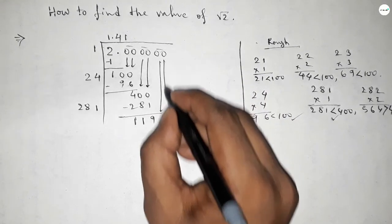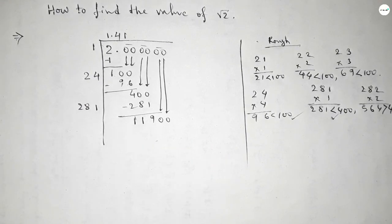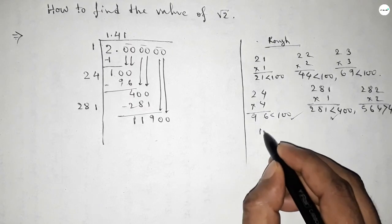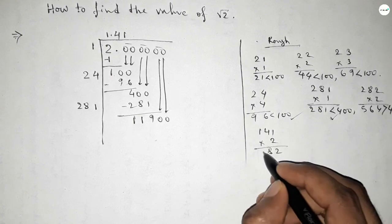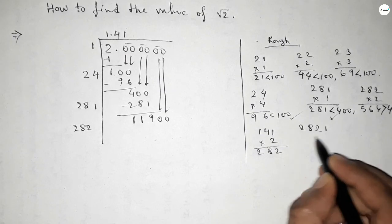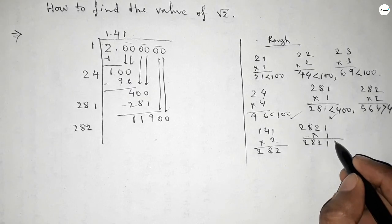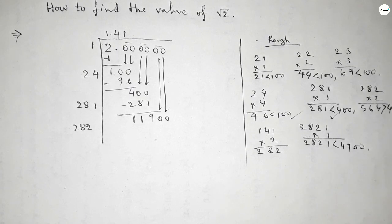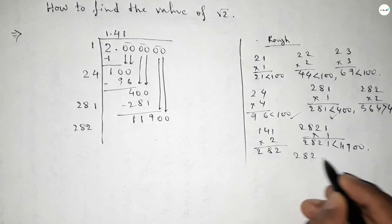Again putting the pair of zeros here. In similar ways we take the double of 141, so multiplying by 2, so this is 2822. In similar ways, if we put 1 here, then this is 2821, which is less than 11900 but not almost near to 11900.